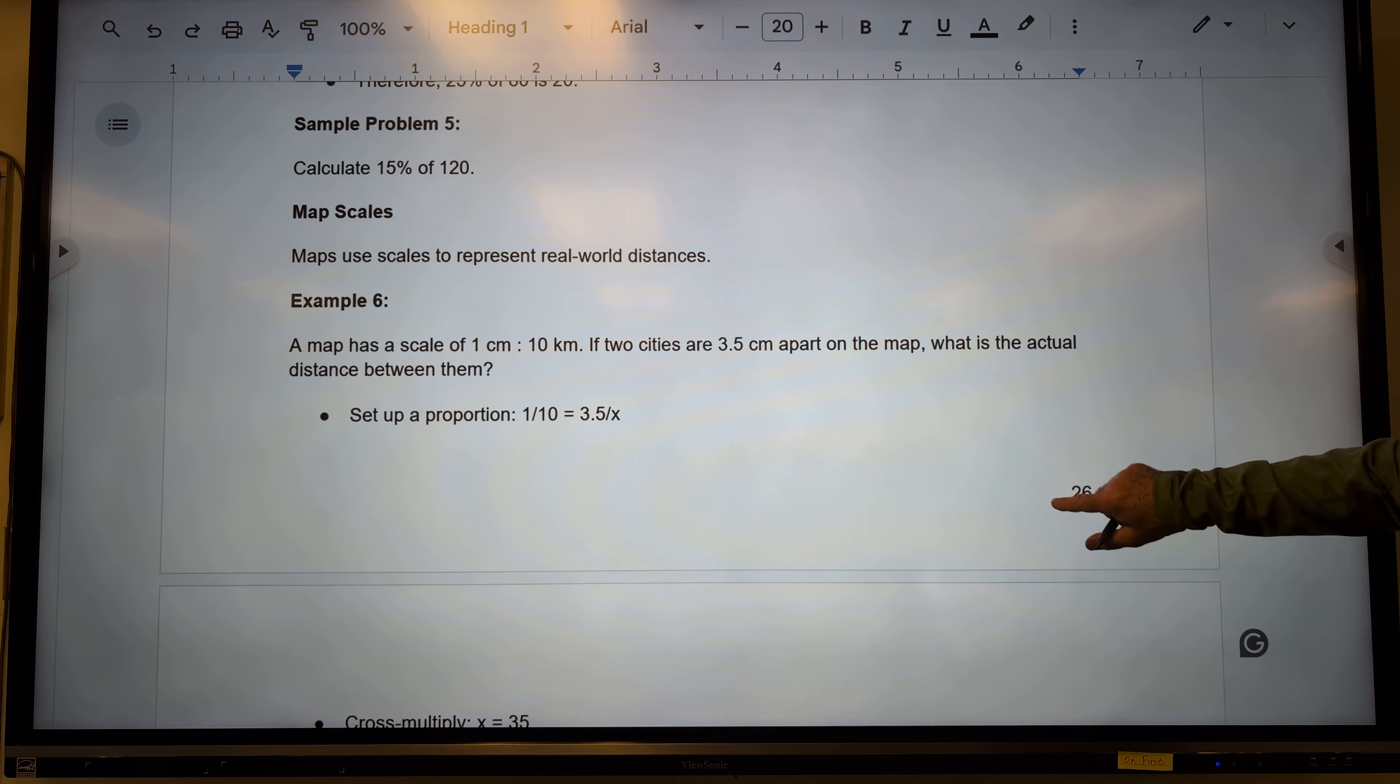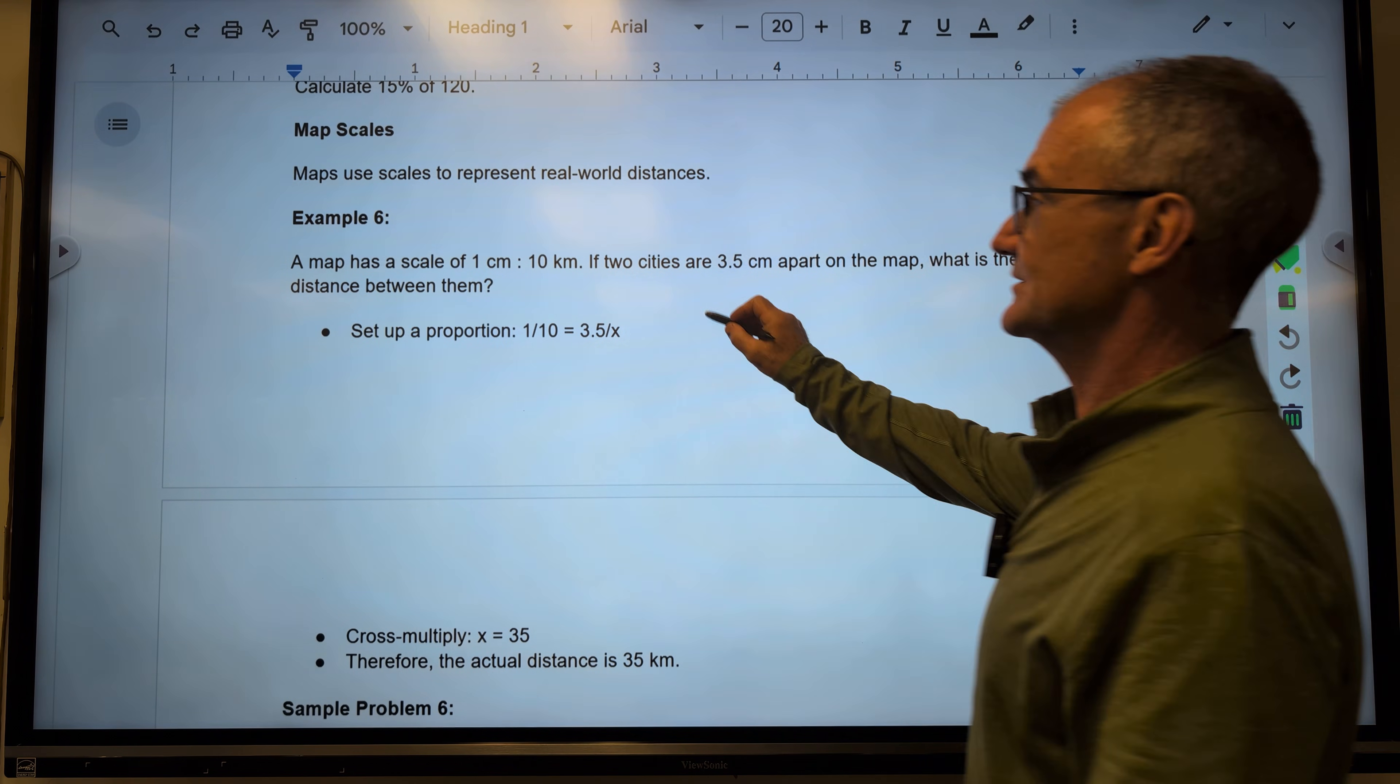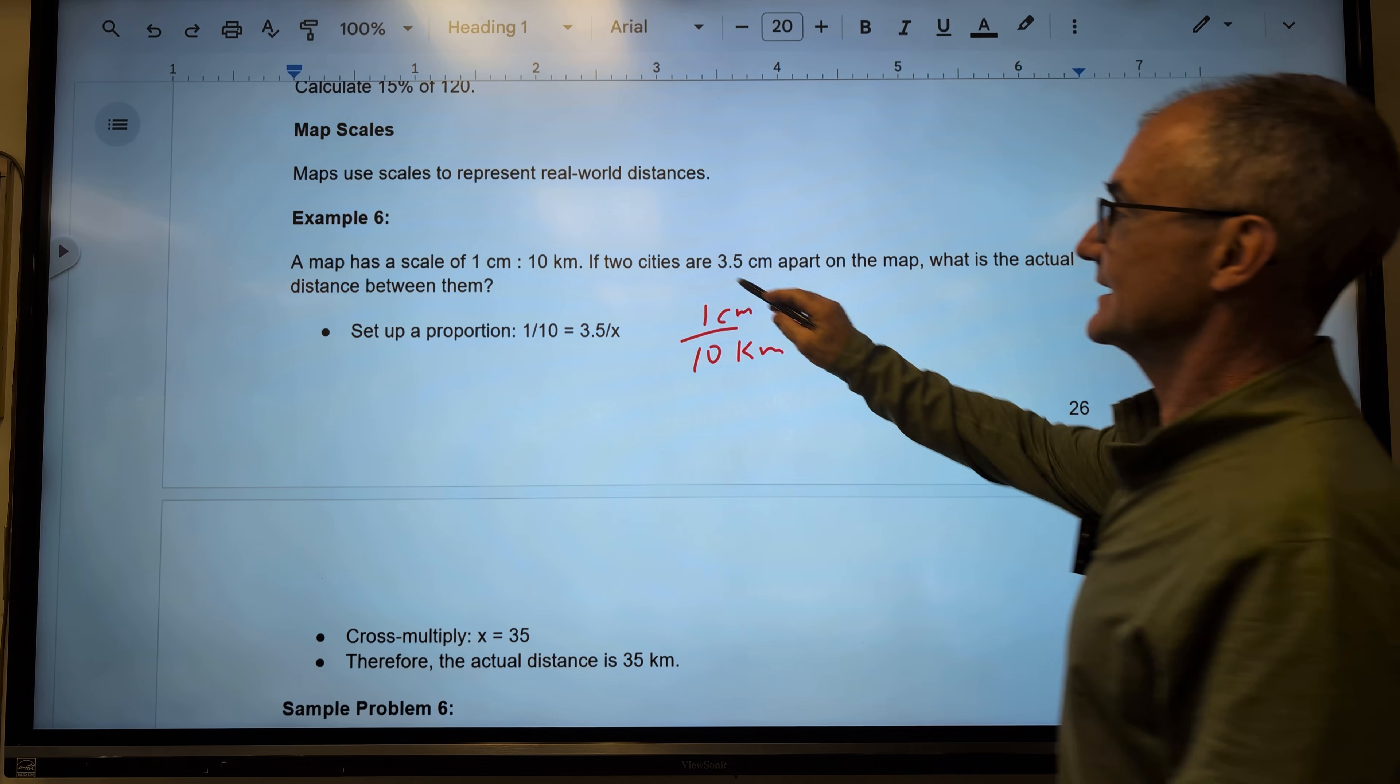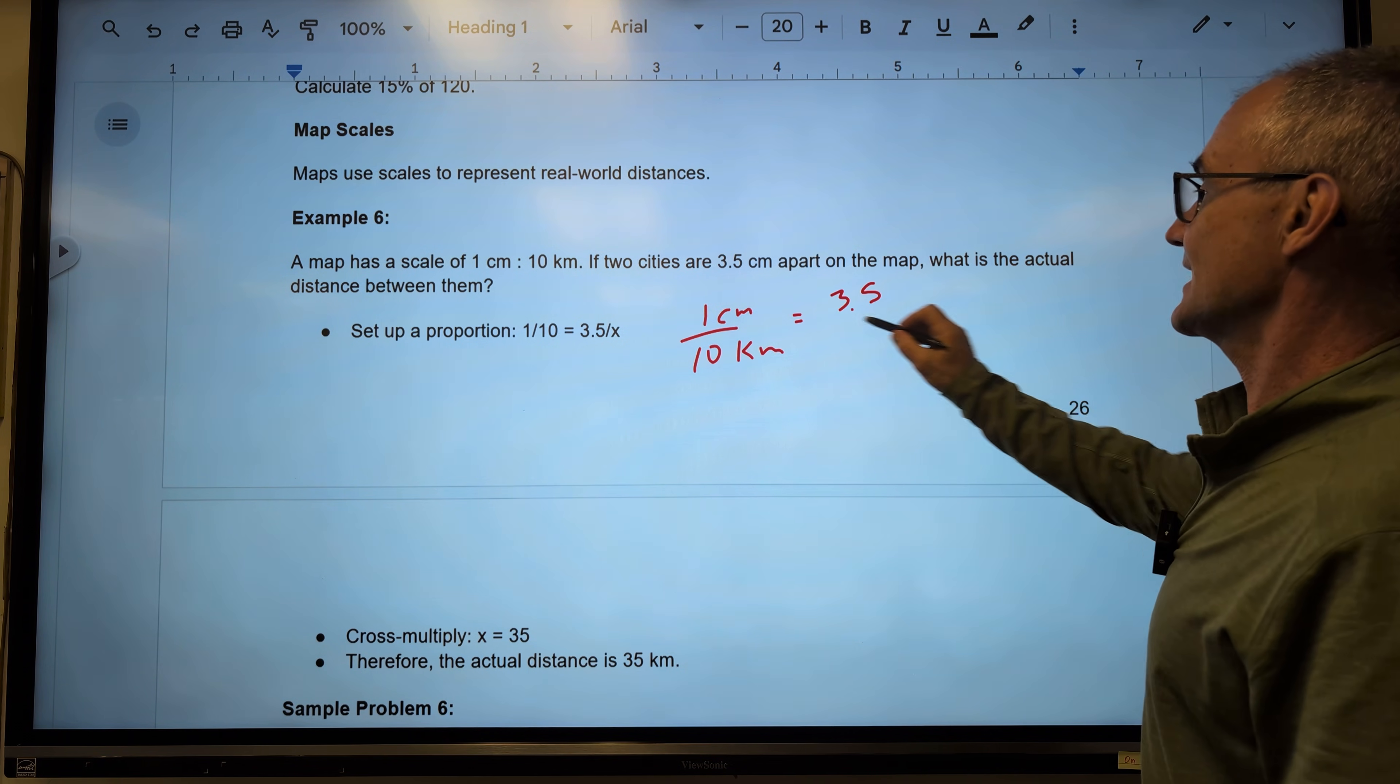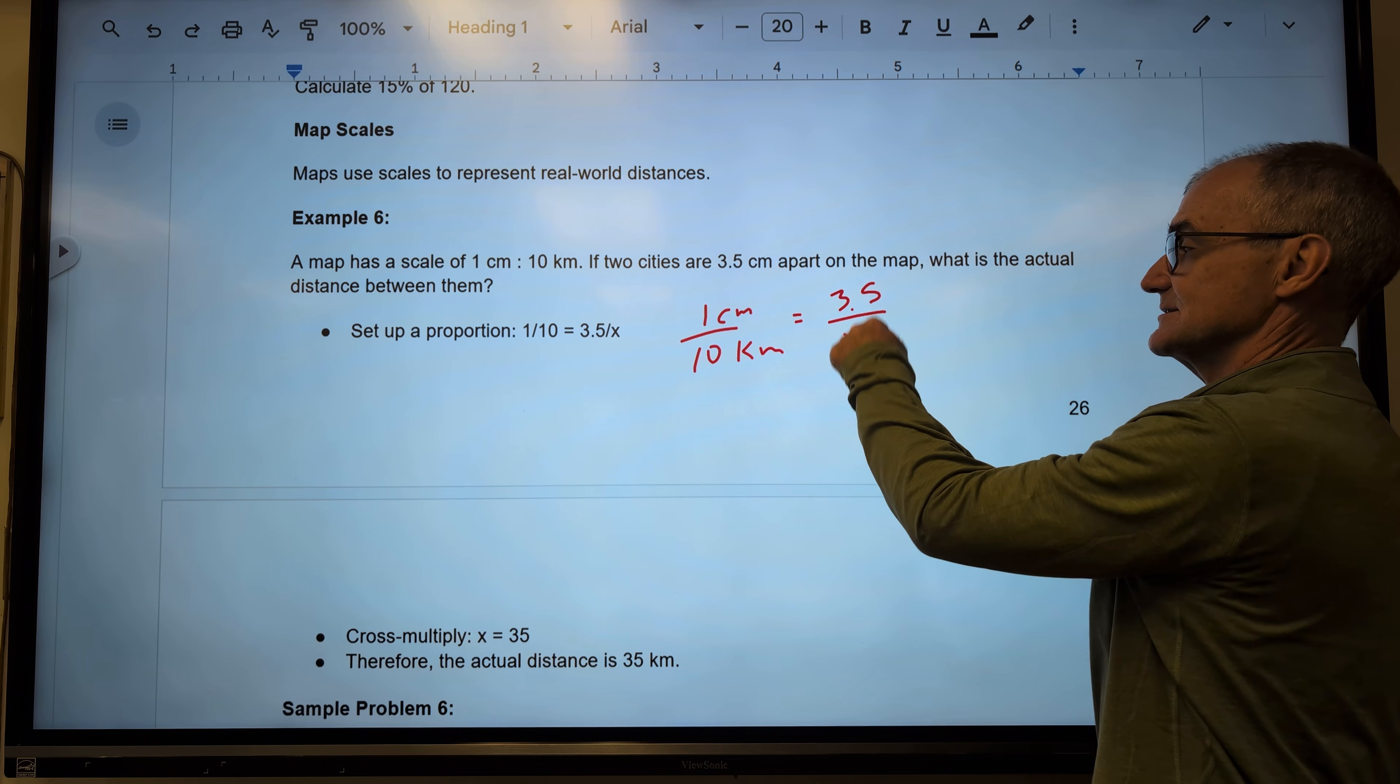Okay. Let's take a couple of scale problems here. So a map uses scales, which are ratios. If I have one centimeter equals 10 kilometers, and on the map it is 3.5 centimeters on the map, what is the distance between them? So I got my centimeters to kilometers, centimeters to kilometers.